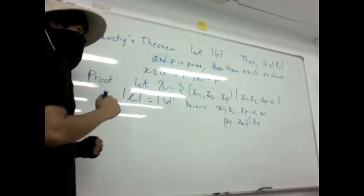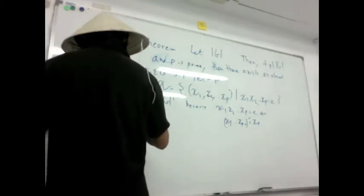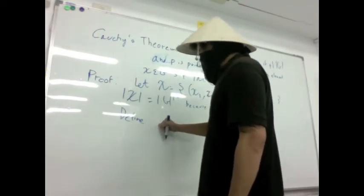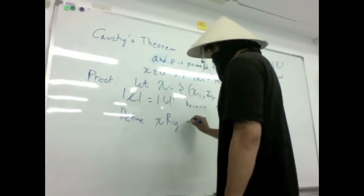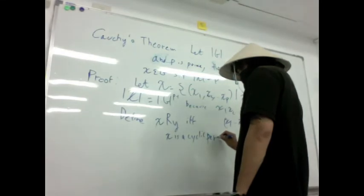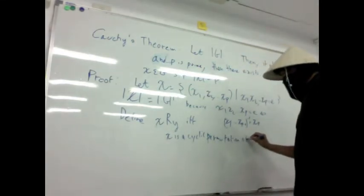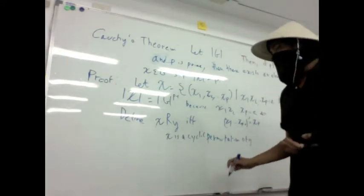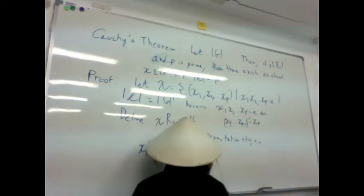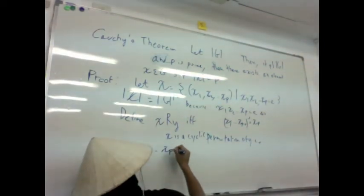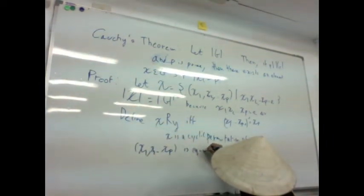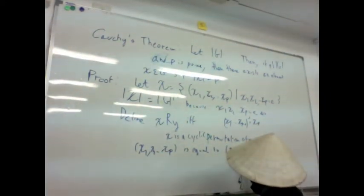Next part: define an equivalence relation. Define the relation ~ on X where x ~ y if x is a cyclic permutation of y. What does it mean to be a cyclic permutation? For example, if we have the string (x_1, x_2, ..., x_p), a cyclic permutation would give (x_2, x_3, ..., x_p, x_1) or (x_3, ..., x_p, x_1, x_2), and so on.